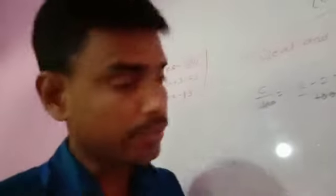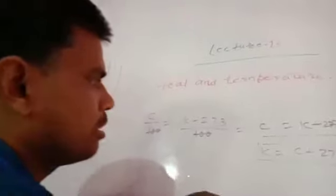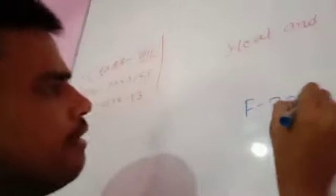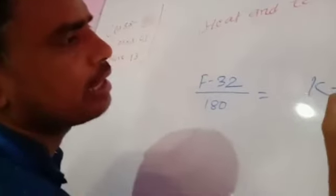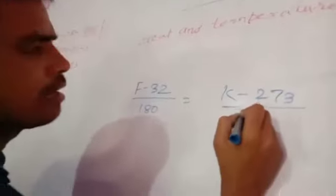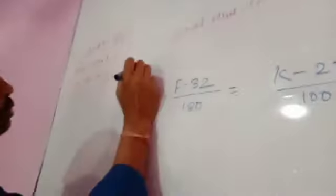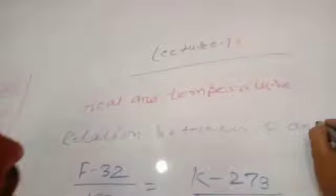Today we will see the relation between Celsius, Fahrenheit, and Kelvin. The relation for Fahrenheit and Kelvin is: F minus 32 by 180 is equal to K minus 273 by 100. This is our relation. Clear?